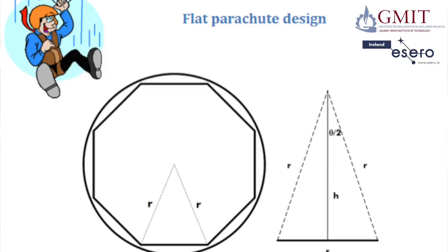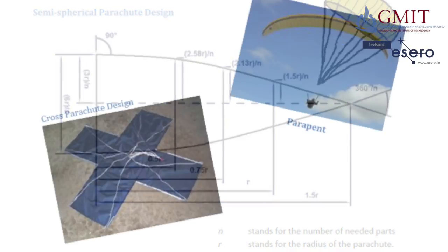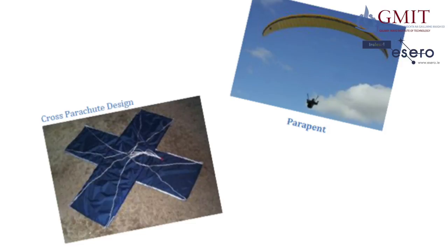Another type is the semi-spherical chute. Although it's not too difficult to make, it can be time consuming to get the shape right. Instead of using a semi-spherical shaped parachute you could choose to use a cross shape. This one is easy to make.